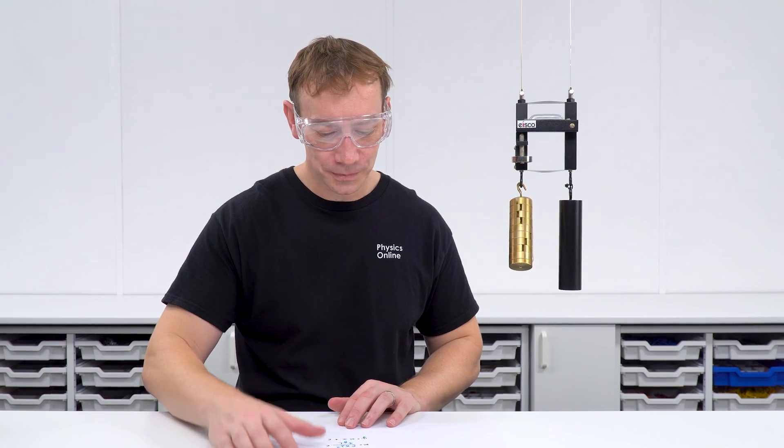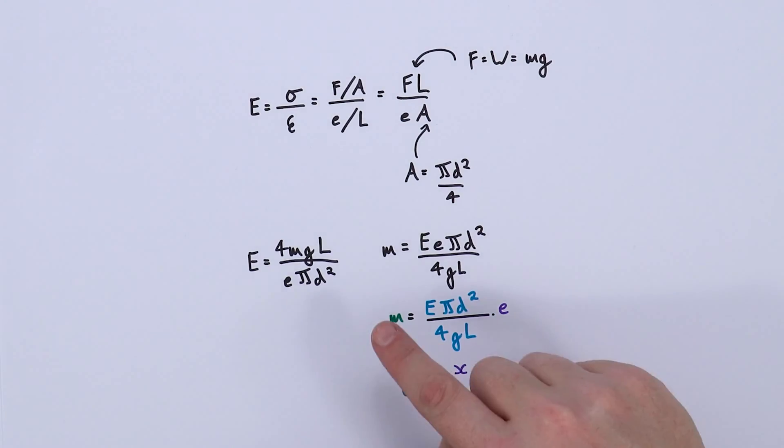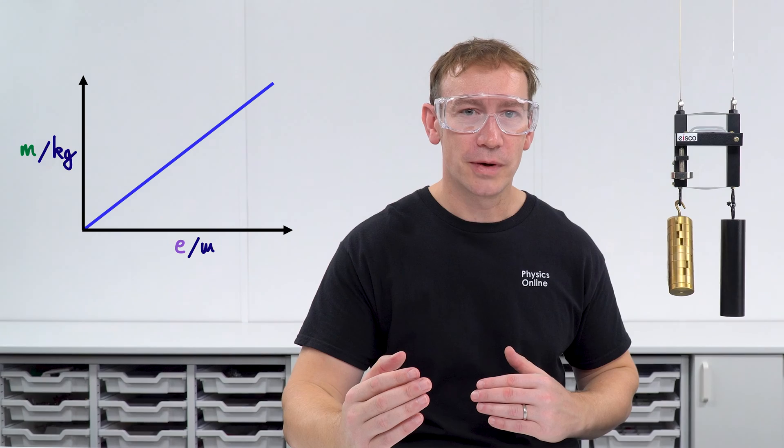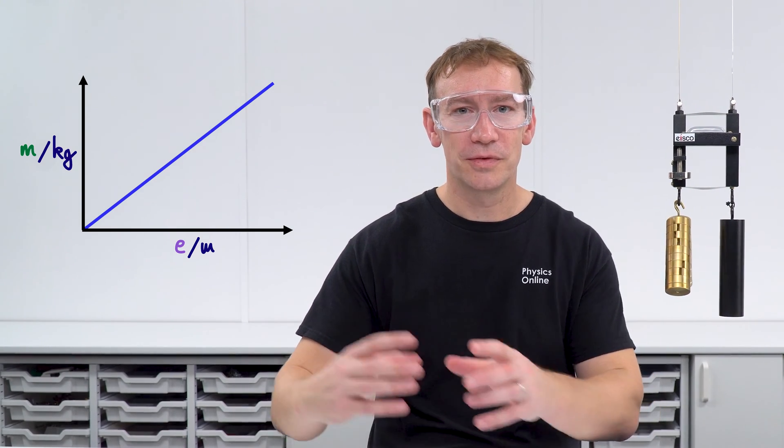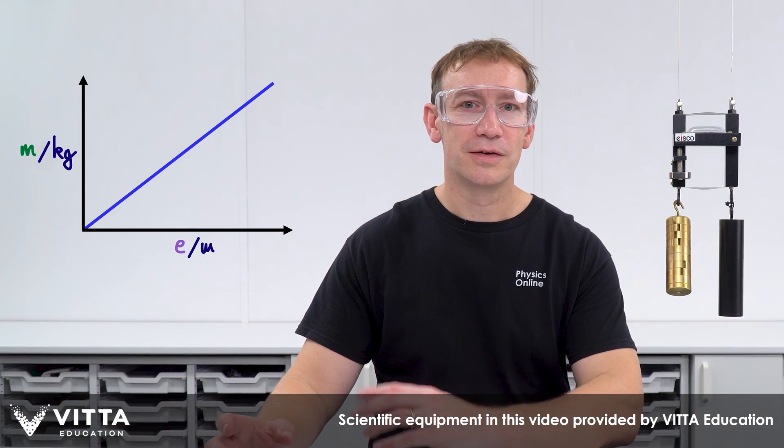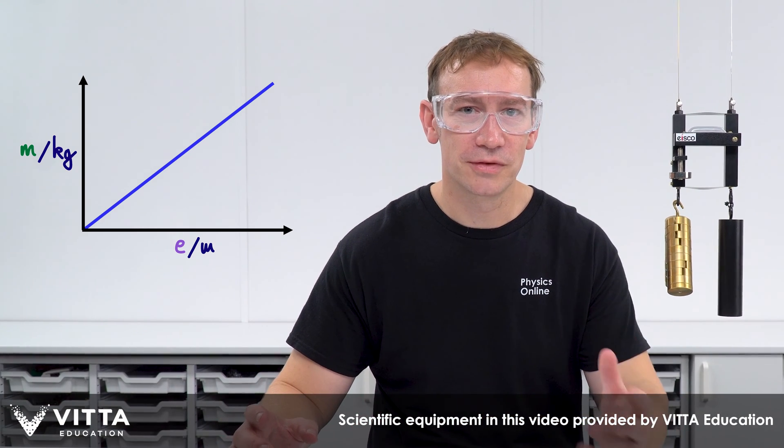And of course I've got another video where I went through this in a bit more detail but effectively if you know the mass that you're applying you can measure the extension and then as long as you know the original length of the wire and the diameter of the wire you can use that with some data plotted on the graph to work out the value of Young's modulus for that material.